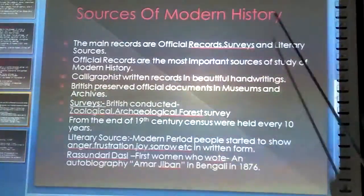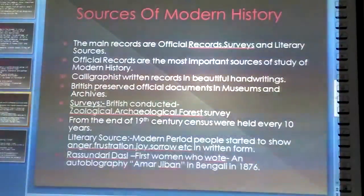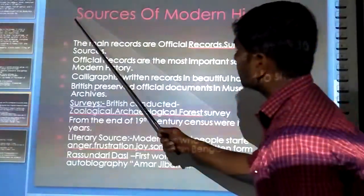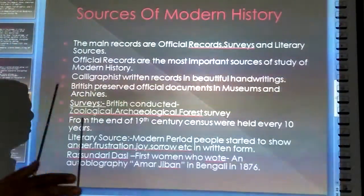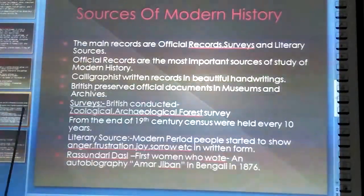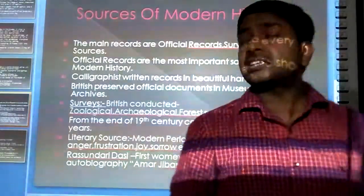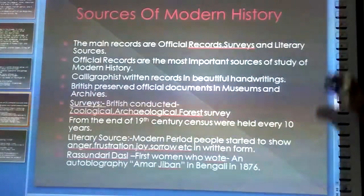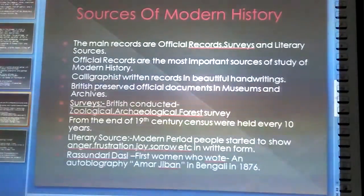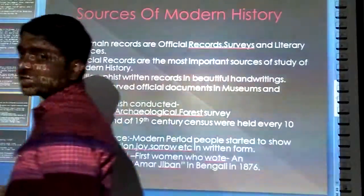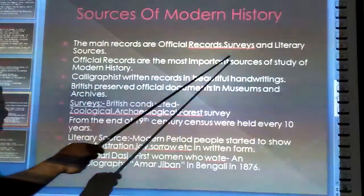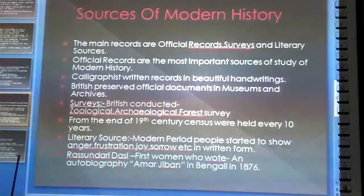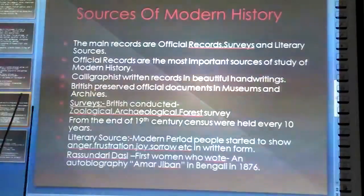In this slide, we are going to discuss the sources of modern history. History can be written on the basis of sources. Source means the facts, data, clues, and hints that are gathered and on the basis of which historians write history. There are different sources of modern history. The main sources are official records, surveys, and literary sources — meaning the sources of modern history can be divided into three parts.